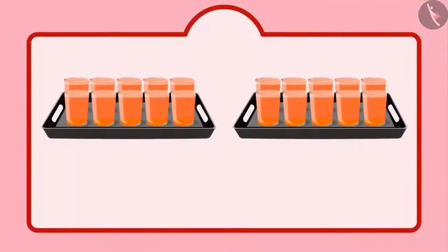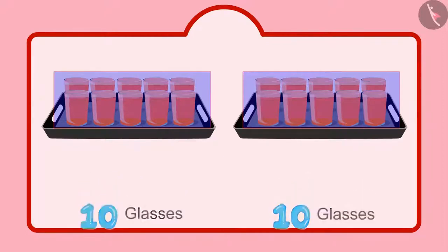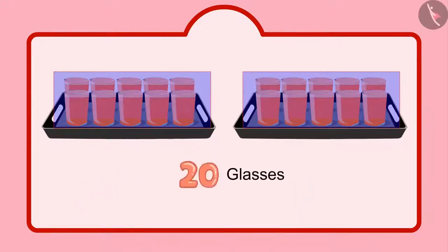Children, can you tell me how many glasses of sherbet Chotu's mother has made? Yes, you are right, children. Chotu has 2 plates of 10 sherbets each. It means 2 tens. This means Chotu has 20 glasses of sherbet.